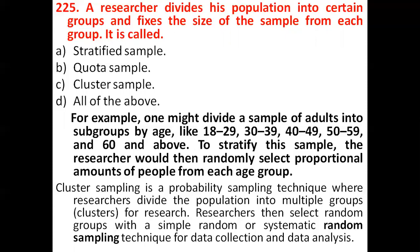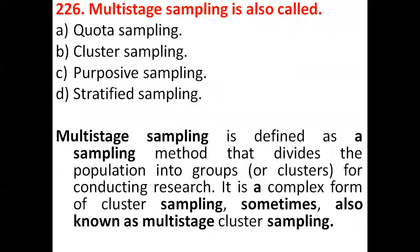The next question: multi-stage sampling is also called — options: quota sampling, cluster sampling, purposive sampling, stratified sampling. Multi-stage sampling is defined as a sampling method that divides the population into groups or clusters for research, also known as cluster sampling — sometimes called multi-stage cluster sampling. The correct answer is option B.